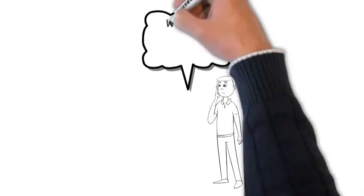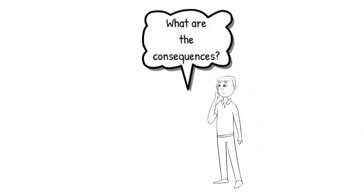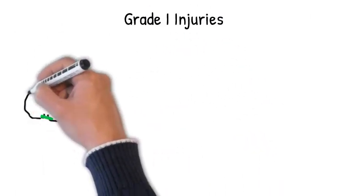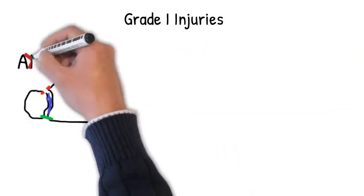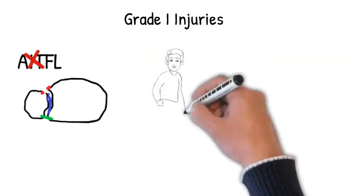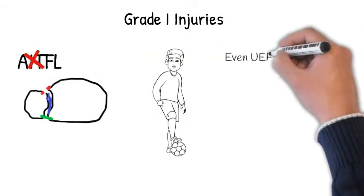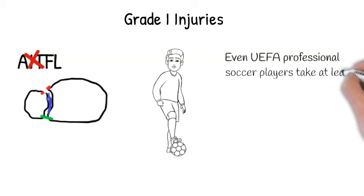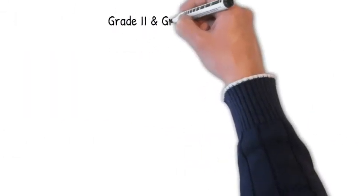What are the consequences of a syndesmotic injury? Well, it depends what grade you've got. A grade 1 injury, where you just go through that front ligament only, usually doesn't need an operation, but they take a long time to recover. Even the UEFA professional soccer players, where they've got all that backroom staff, they take 5 weeks at least to return to play.